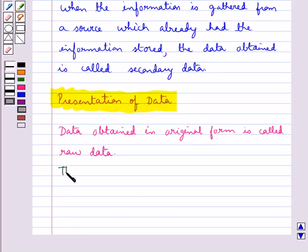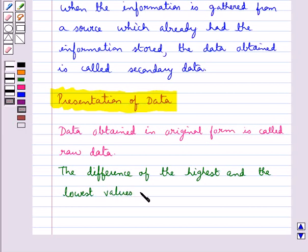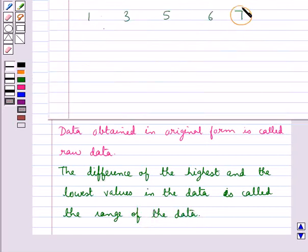The difference of the highest and the lowest values in data is called the range of data. In this case, you can see that this is the highest value and this is the lowest value. Their difference is the range of the data.